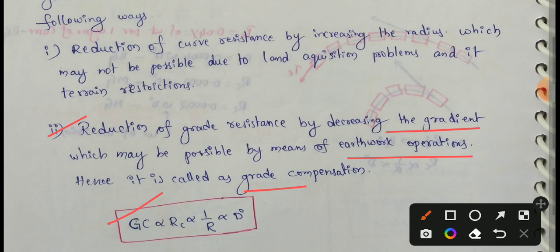Grade compensation GC is proportional to curve resistance RC, where RC stands for curve resistance. This means grade compensation is directly proportional to curve resistance, inversely proportional to radius, and directly proportional to the degree of curve or degree of curvature.